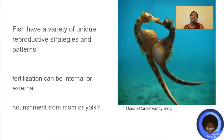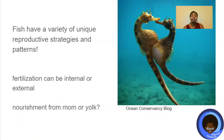Fish have a lot of really unique reproductive strategies and patterns. With these reproductive strategies, fertilization can either be internal or external, and the nourishment that those embryos get can either come directly from mom or from something like a yolk.